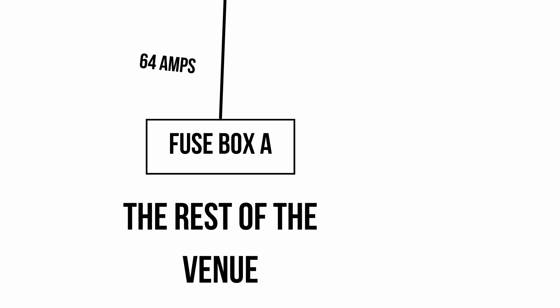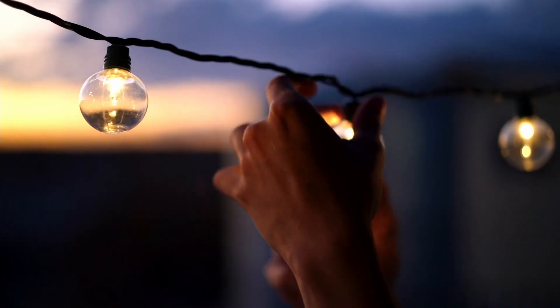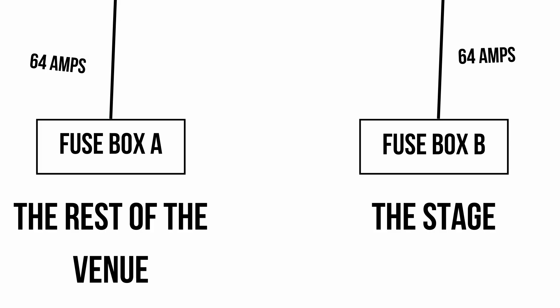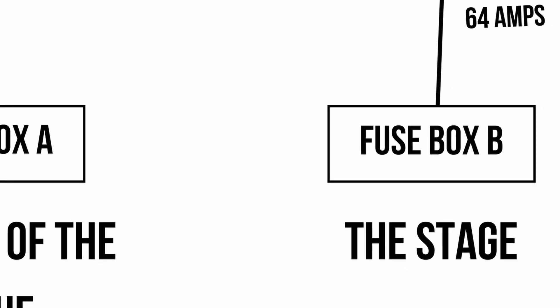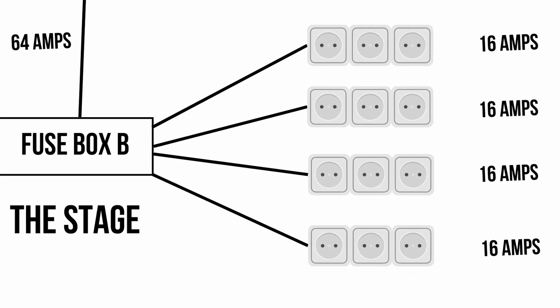Those two 64s go to power cabinets — a circuit breaker panel — where the power is broken down further into several circuits. You might find that one 64 is allocated to the rest of the venue — bar, lighting, that sort of thing — and the other 64 is allocated to the stage. Here in Norway, a regular wall outlet runs at 16 amps maximum, which means with 64 amps available for the stage, you can have four separate 16-amp circuits to connect things to. Think of it like four independent channels on your sound mixer.